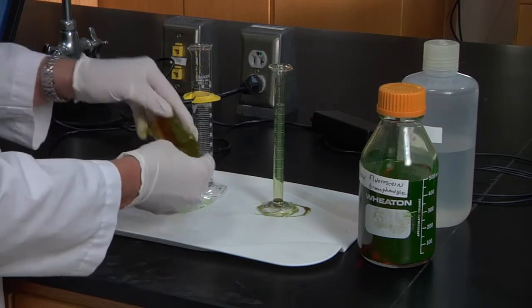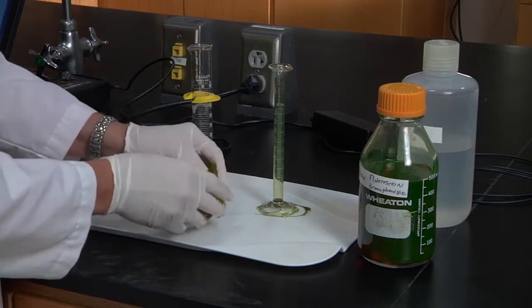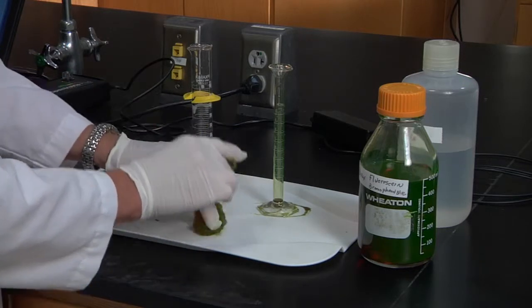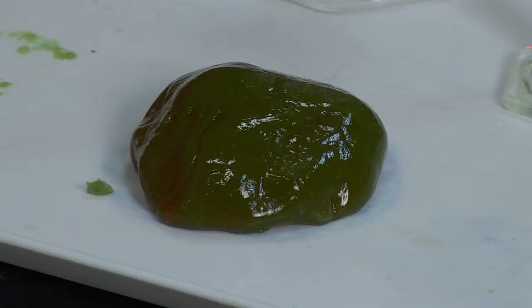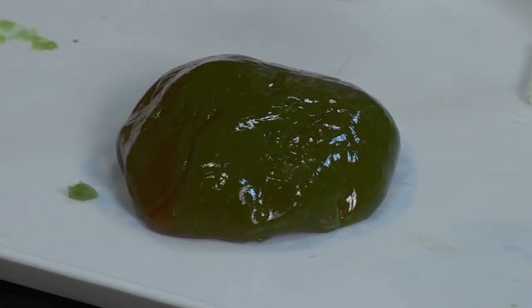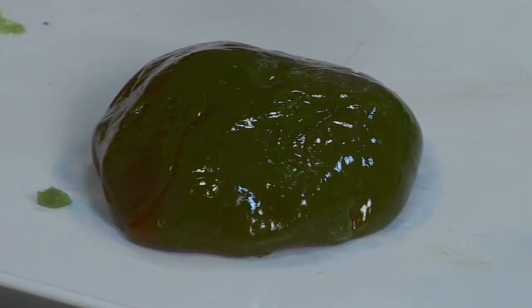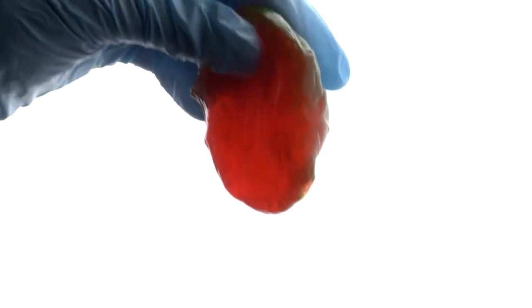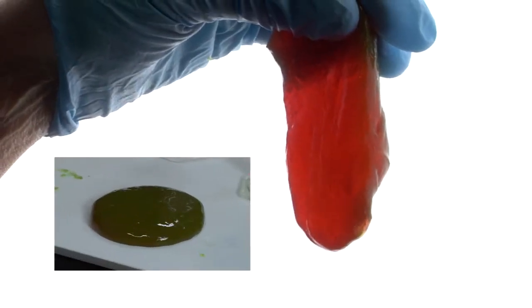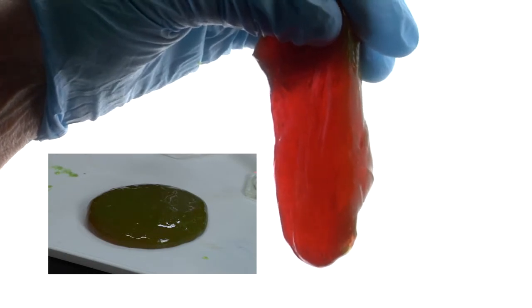And I want you to tell me what color you see. What color is that? Are you sure it's green? Let's see. Let's hold it up to light and see what happens. It looks red to me. So your task is to explain to me why, when I hold it up to the light, it looks red, but when I have it laying on a solid surface, it looks green.